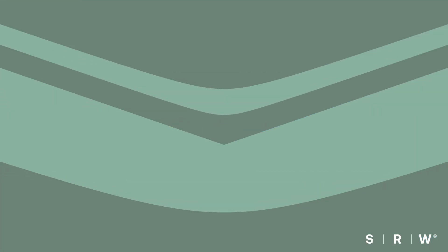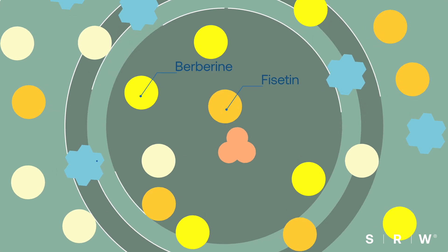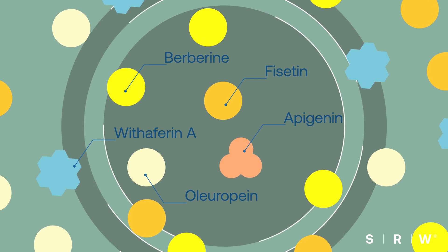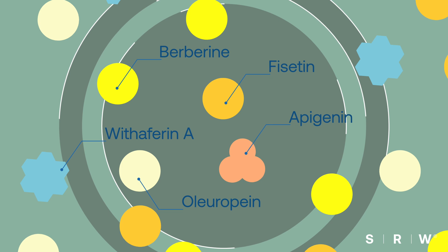The synergistic formula of Cell 3 also contains fisetin, berberine, withaferin A, apigenin, and oleuropein, which together support autophagy levels, cellular renewal, and normal protein structure.